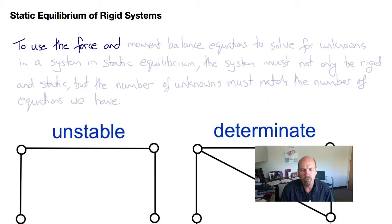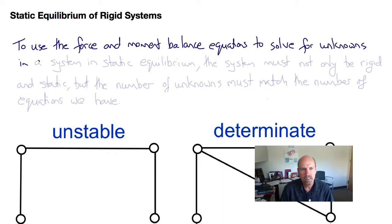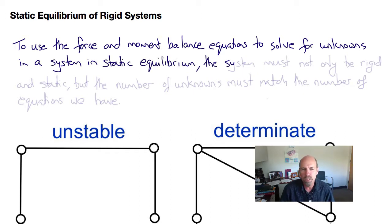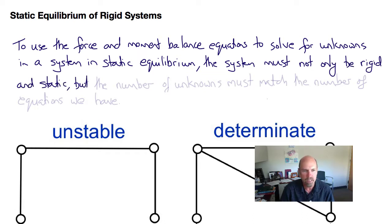In order for us to use the force and moment balance equations of statics to solve for the unknowns in a system in equilibrium, the system not only has to be rigid and static, but the number of unknowns that we're trying to find must match the number of equations that we have available from the force and moment balances.